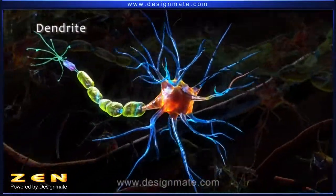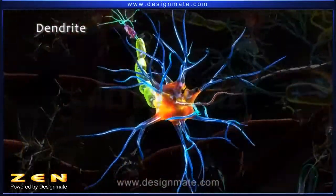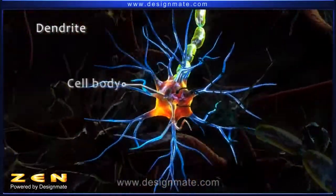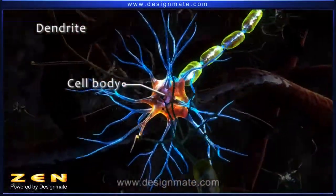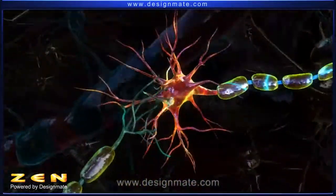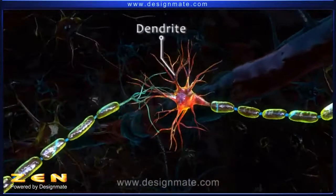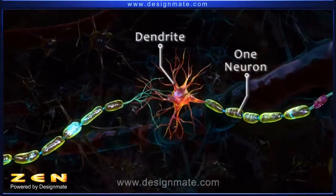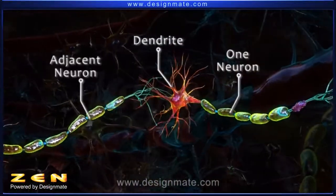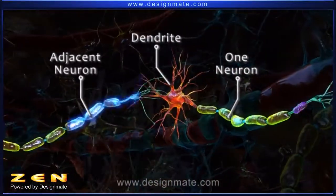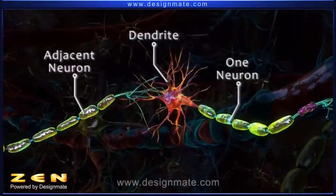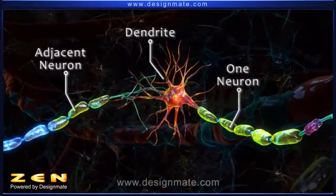Dendrites are the short, branched cellular extensions of the cell body. They connect the neuron to the other surrounding neurons and receive signals in the form of impulses.